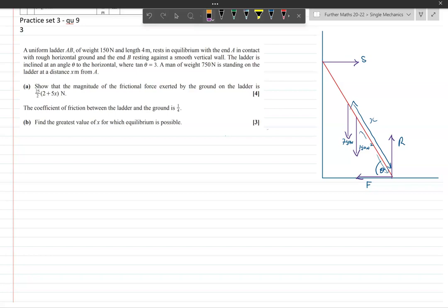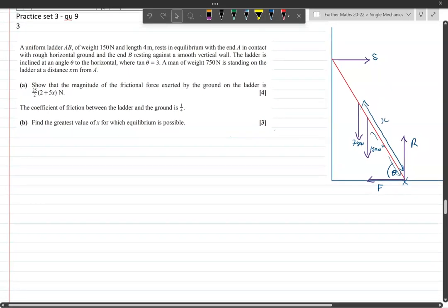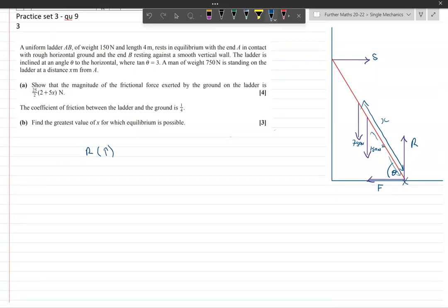In these scenarios it's common to do two resolving equations and one moments equation. I often do the moments equation around the bottom of the ladder. In this question, for part a, you don't need all resolving equations, but the resolving equations are so simple. Resolving vertically, we have R equals 750 plus 150, so R equals 900 newtons. Resolving horizontally, we have F equals S.